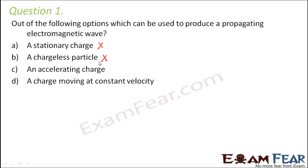The third option is an accelerating charge. Since it is a charge, it will have an electric field. Since the charge is also accelerating, its speed is also changing with time, so it would also have a magnetic field. Here we have an electric field as well as a magnetic field which are changing with time because the charge is accelerating. So this seems to be the correct option because it can produce an electromagnetic wave.